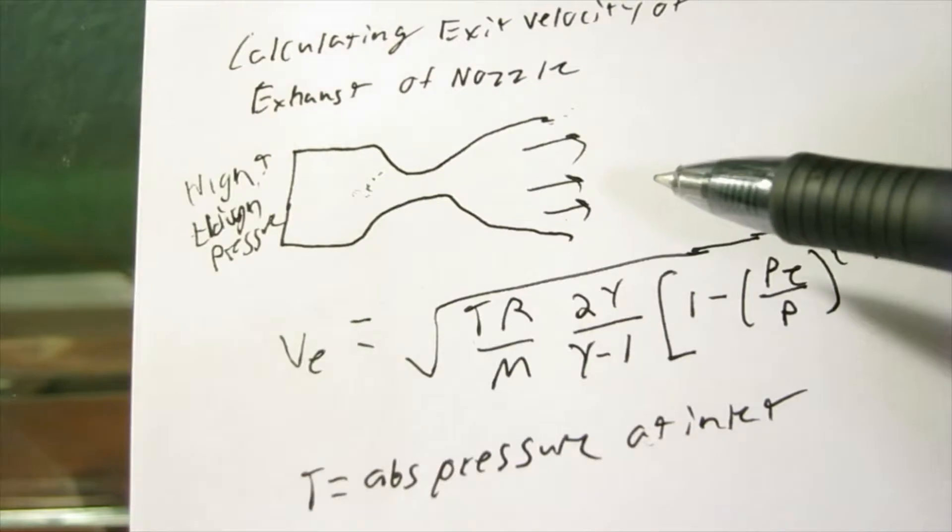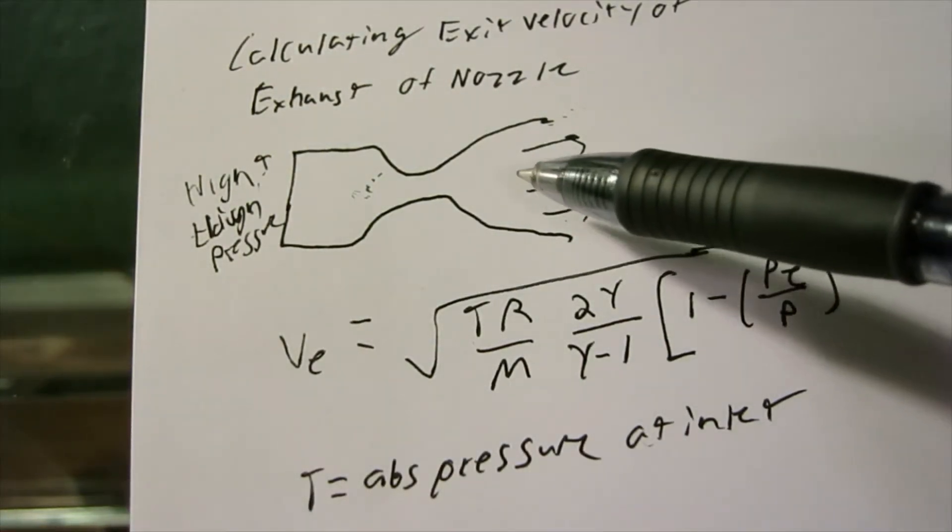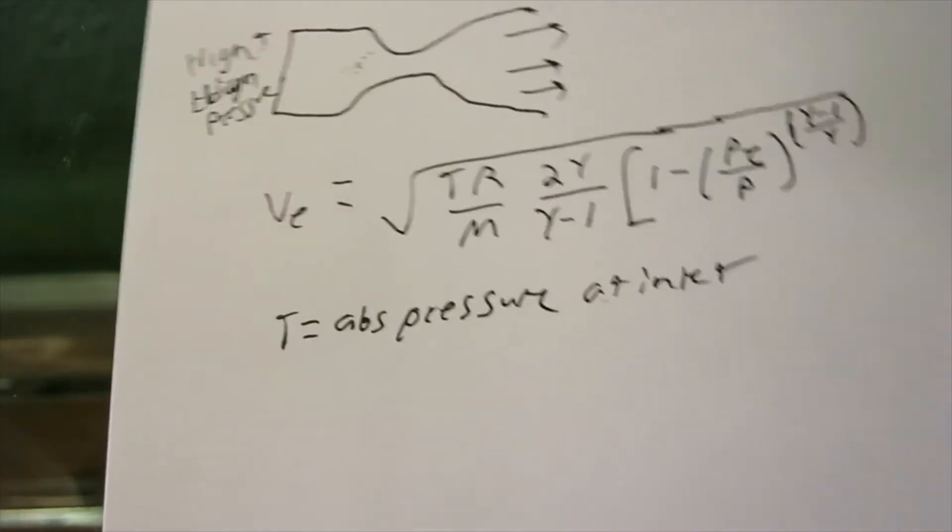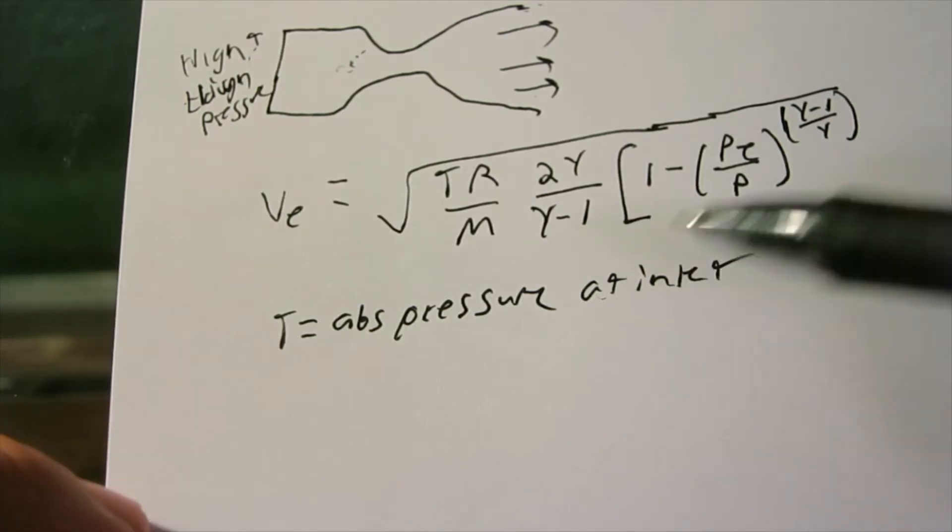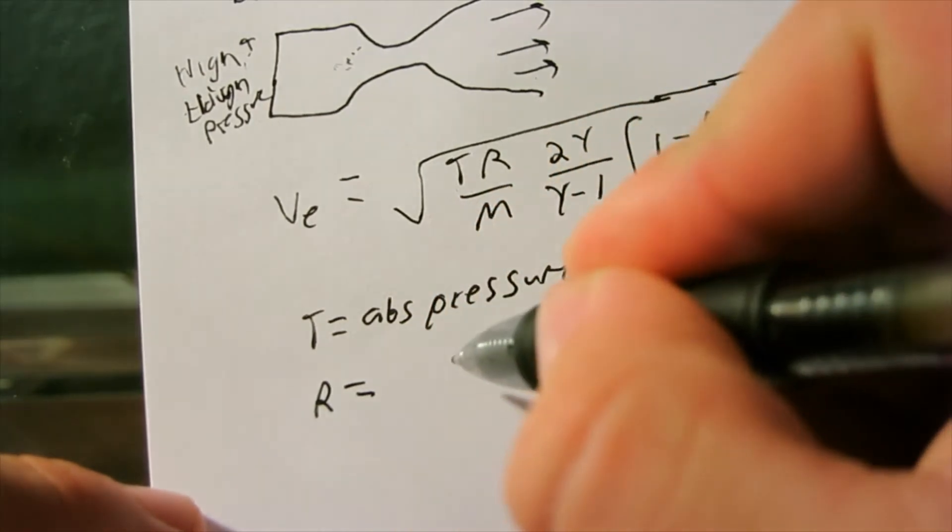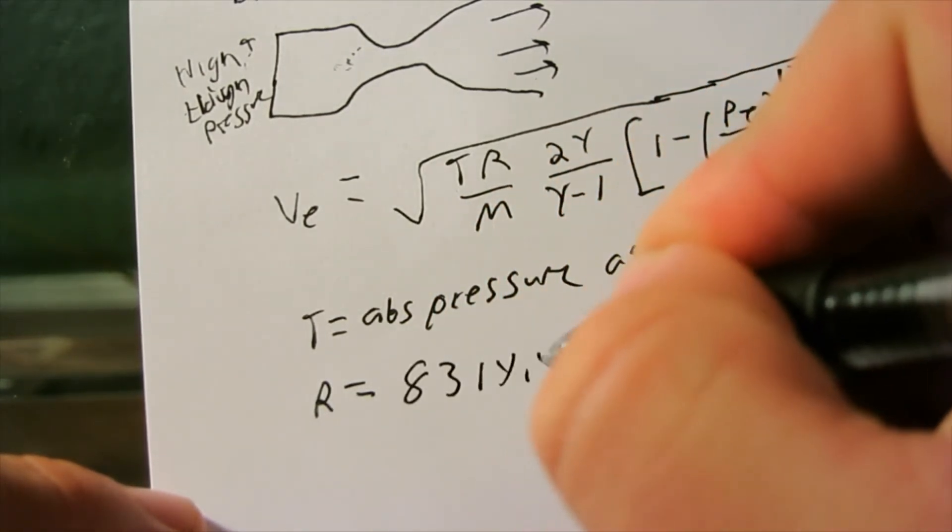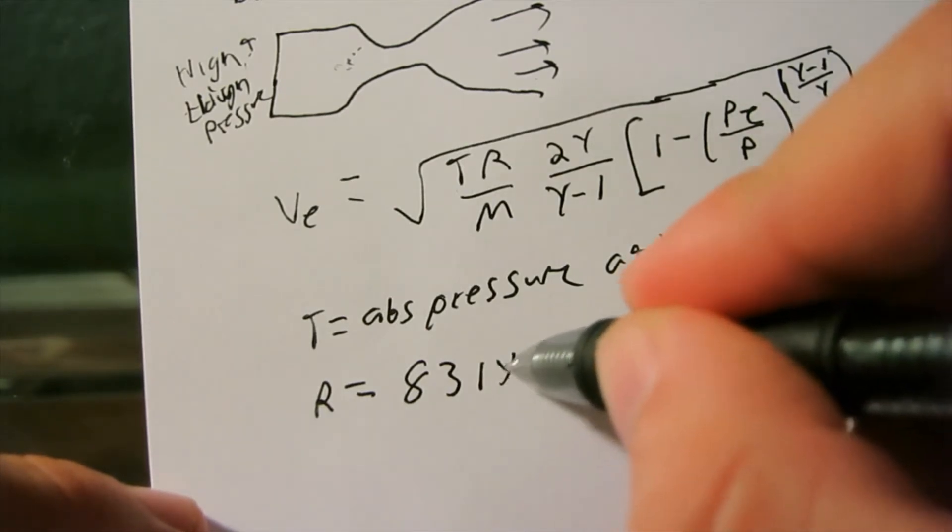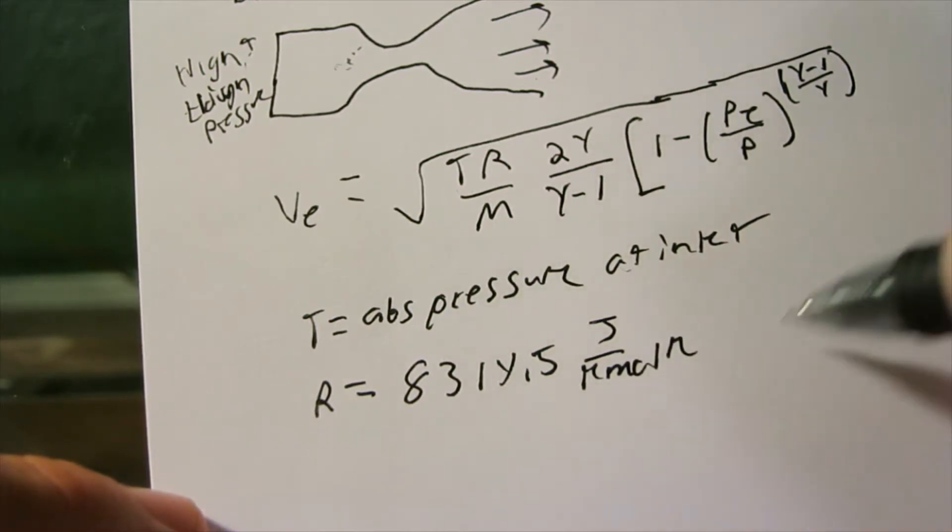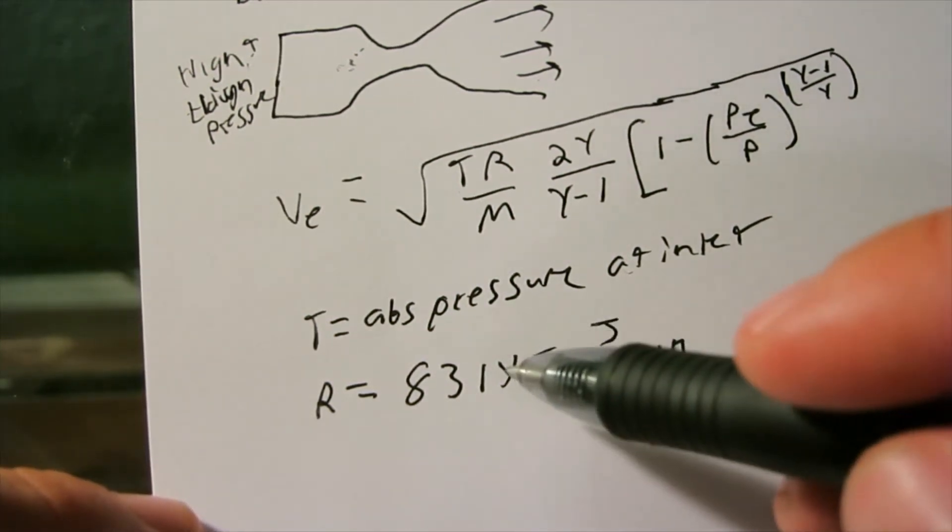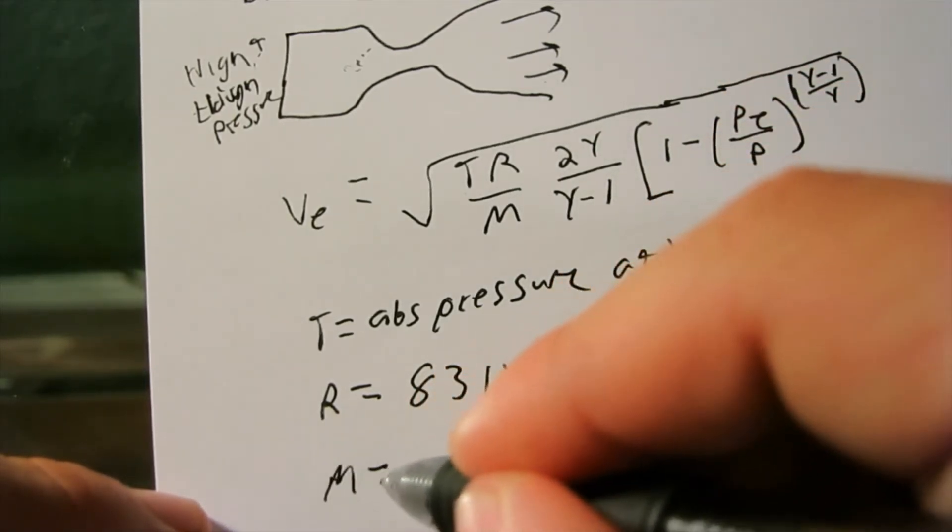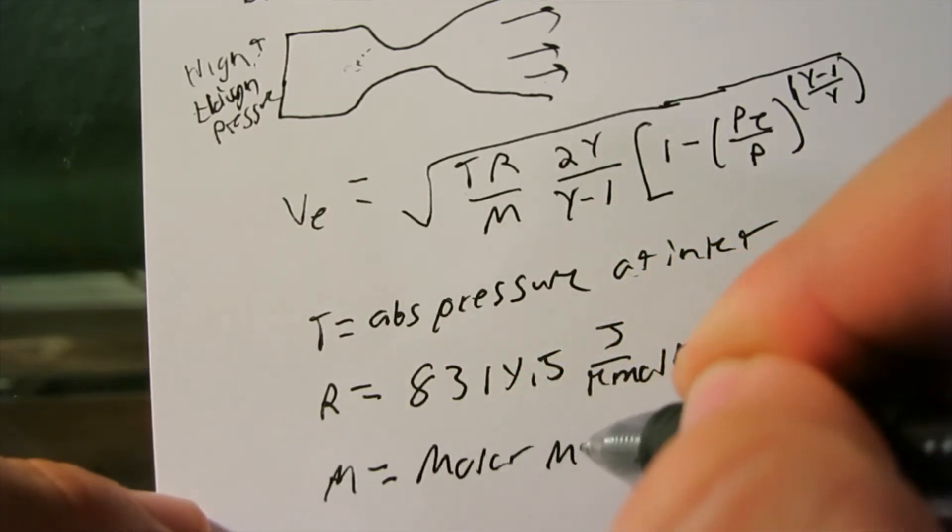If you want to see some derivations of some of these relationships between velocity, pressure, density, you can go check one of my other videos. But for now, we'll just stick with this. Our value for R, this is the universal gas constant, which is 8,314.5 joules per kilomole Kelvin.